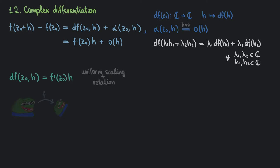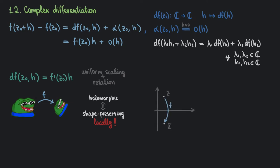Therefore, when acting on geometric figures, holomorphic functions preserve their shapes as well as the orientation of ℂ in sufficiently small neighborhoods. That's why a function giving the complex conjugate of z is not holomorphic. Geometrically, complex conjugation is just a reflection along the real axis, but reflection changes the orientation of the complex plane, so it cannot be described as a composition of scaling and rotation.